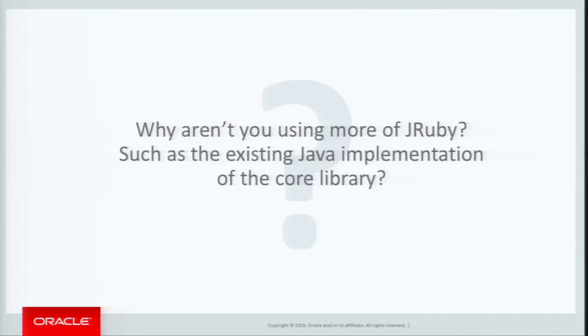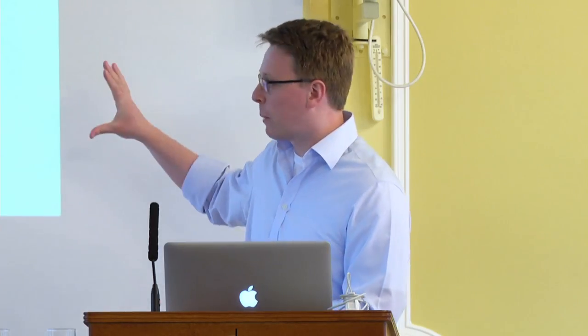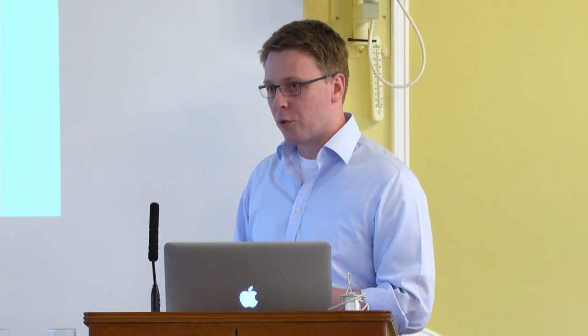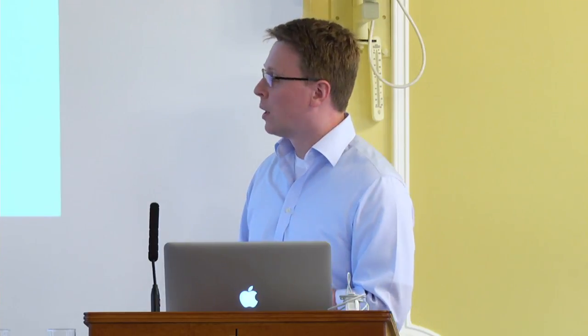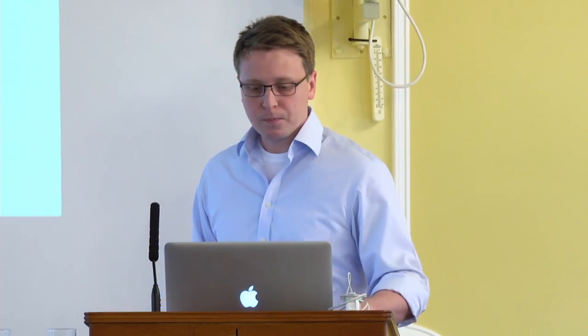One question I often get asked is why aren't you using more of JRuby? They've done so much work implementing the Ruby core library in Java. I'm going to use this as the backbone for explaining the optimizations we've done. The thesis is that the core library of Ruby is what's actually important to optimize — not the basic language constructs — and you need to optimize them at a very deep level, much more than anyone else has done, to achieve that kind of performance.